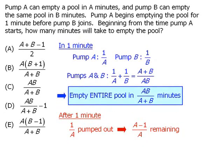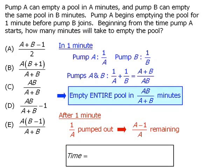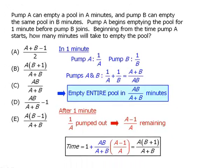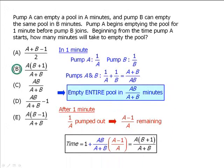We're now ready to determine the number of minutes it takes to empty the pool. First, we have our minute where pump A is working by itself. And to this, we'll add the number of minutes it takes both pumps working together to empty the pool times the fraction of the water that is remaining when both pumps begin working together. And this equals the following, which is the same as answer choice E.